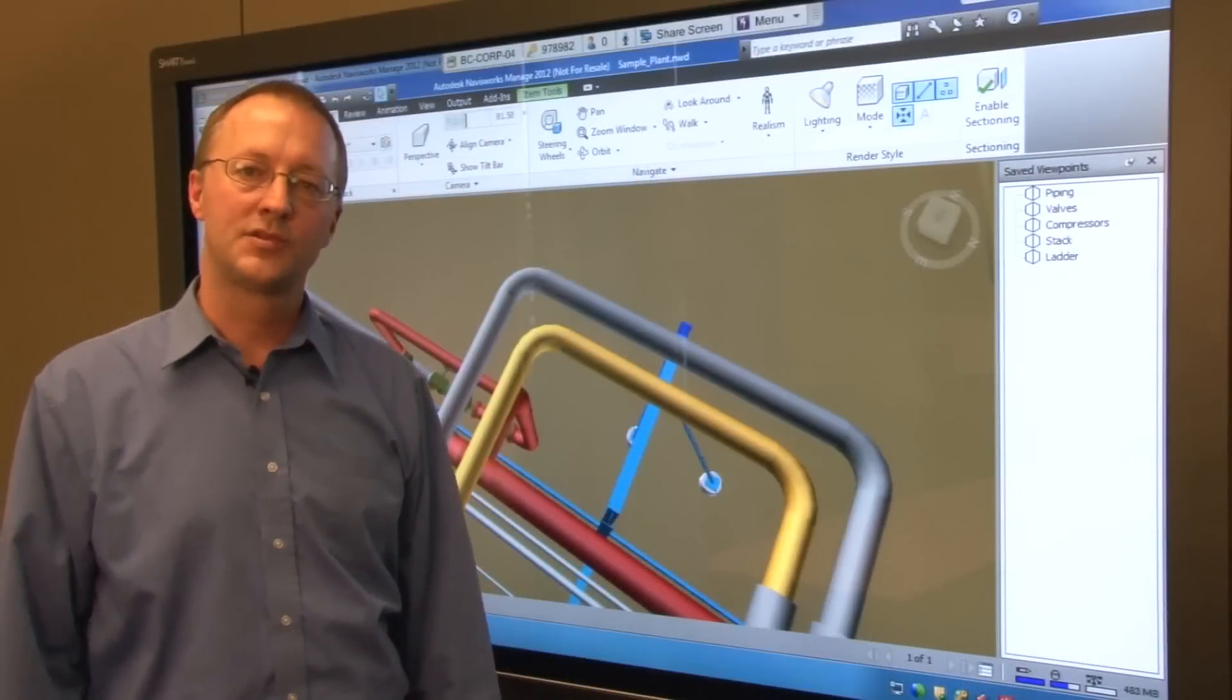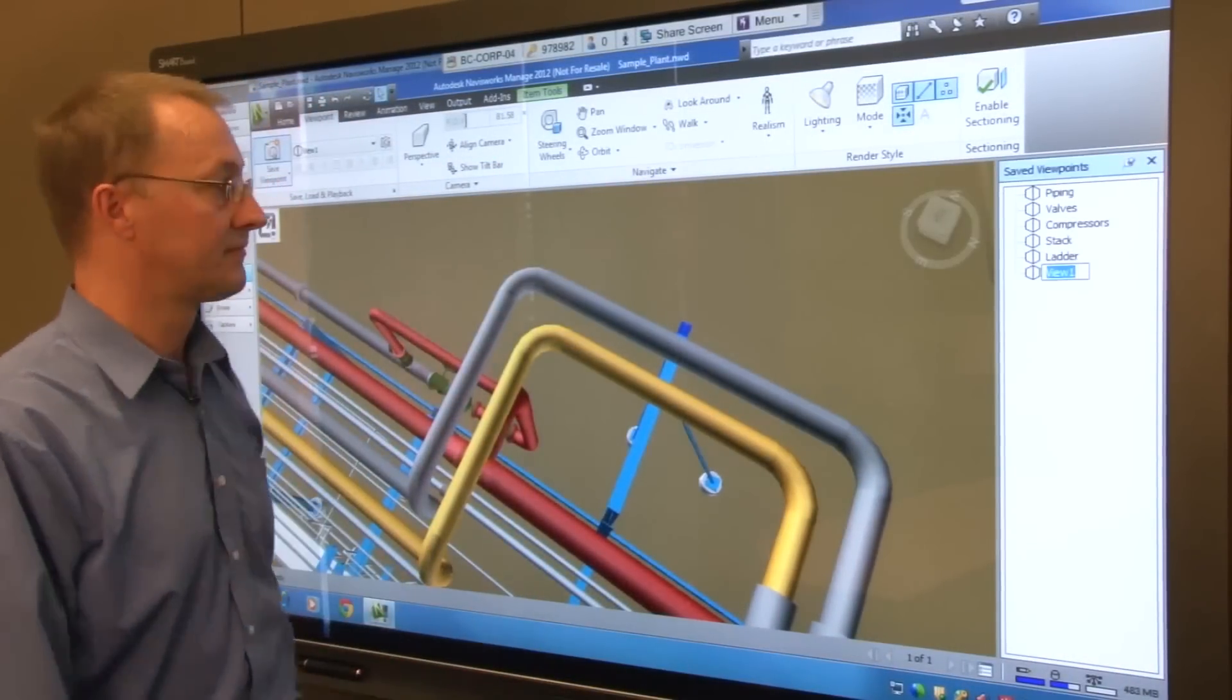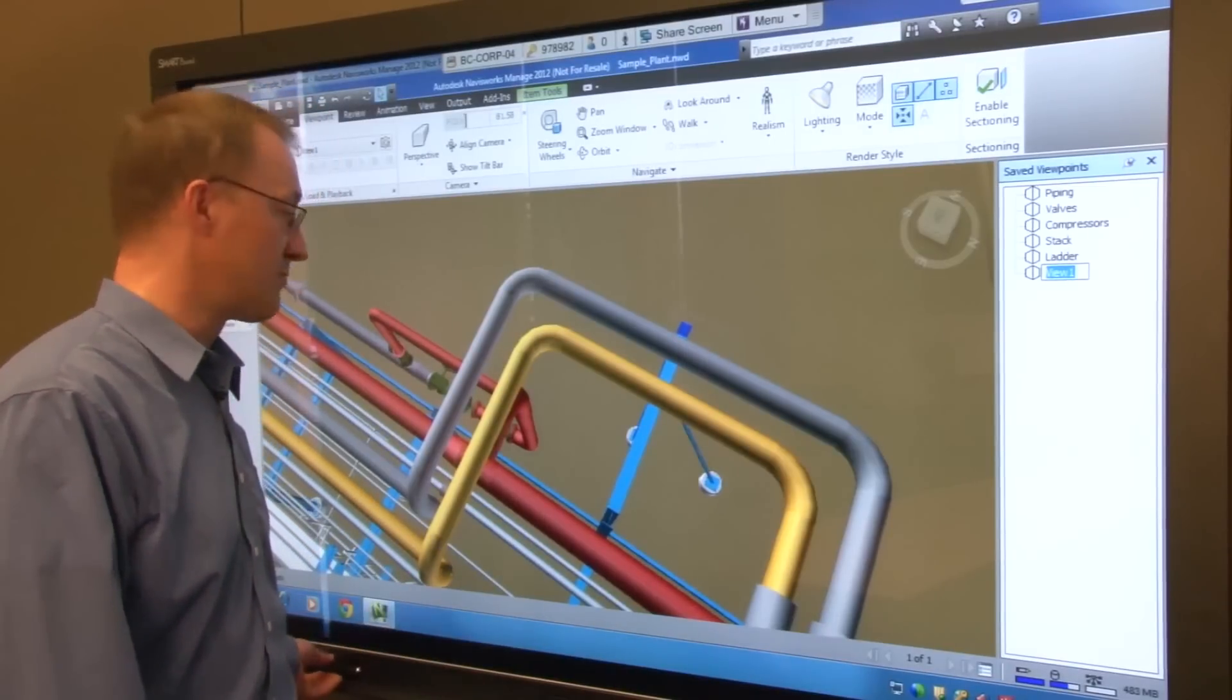Once you have established the image that you want to review with the team simply save the viewpoint in Navisworks. You can now make redline markups directly in the model.